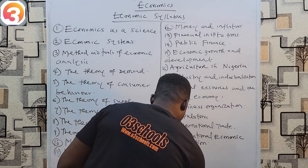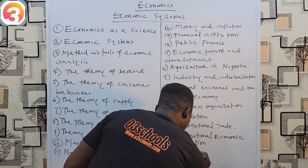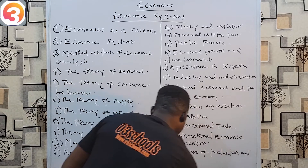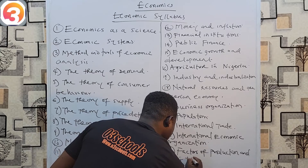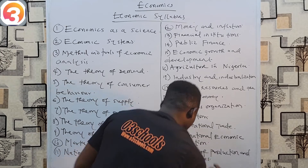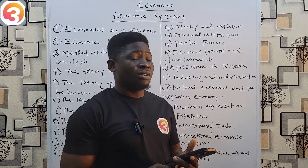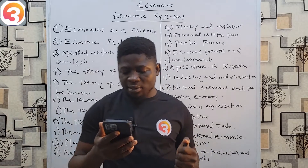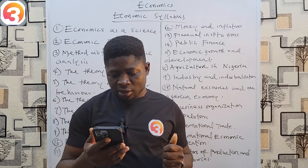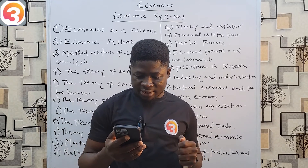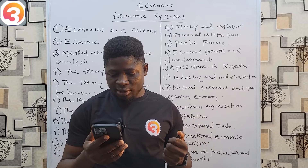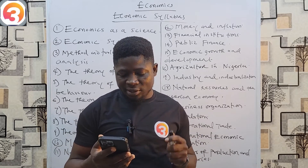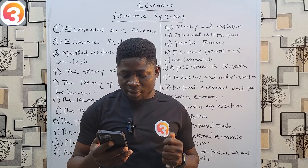Number twenty-three — the last topic — is Factors of Production and Their Theories. Under this, look at the factors and their rewards, determination of wages, interest, and profits, theories such as the marginal productivity theory of wages and the liquidity preference theory, factor mobility and efficiency, and unemployment and its solutions.